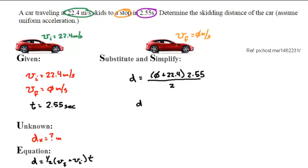Distance equals 22.4 times 2.55 divided by 2. Distance equals 57.12 divided by 2. Distance equals 28.56 meters.